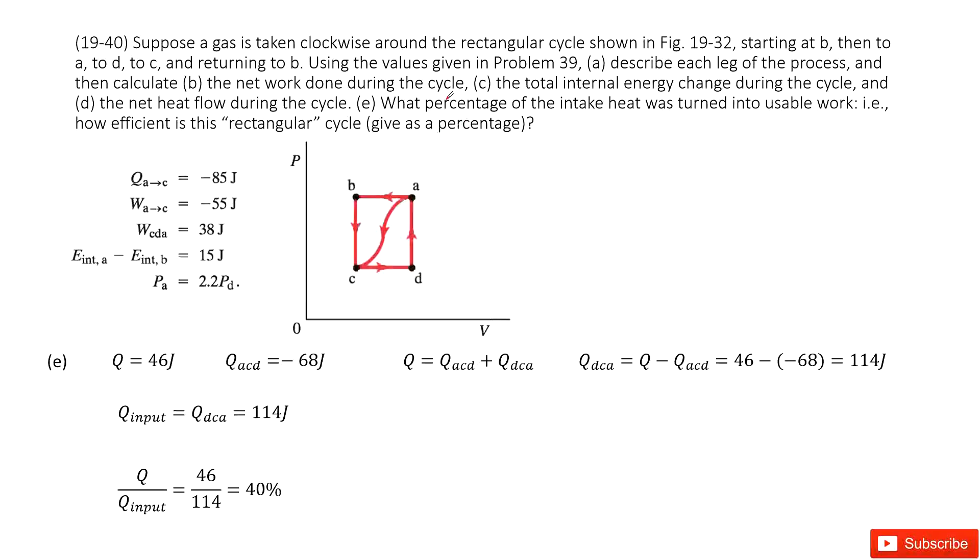The next one asks what is the percentage of intake heat that was turned into useful work. So in this case, if we want to find the intake heat, we just got 46 joules. Now, what is the input heat? This Q is the net heat. What is input heat?